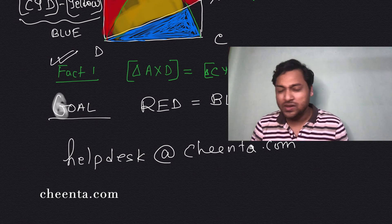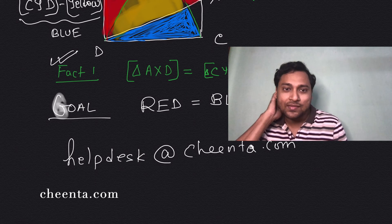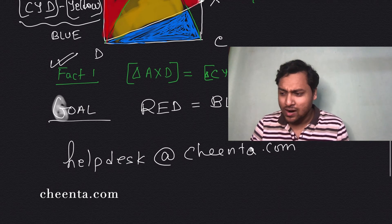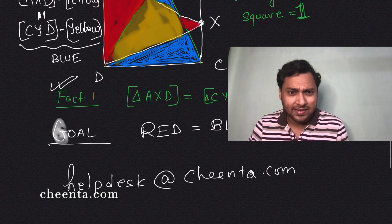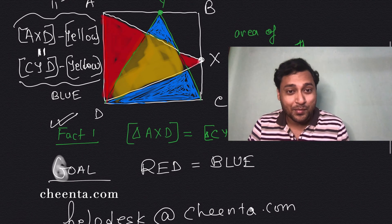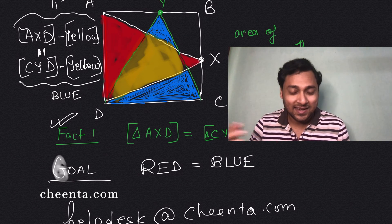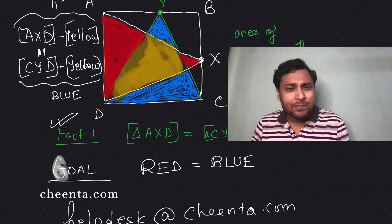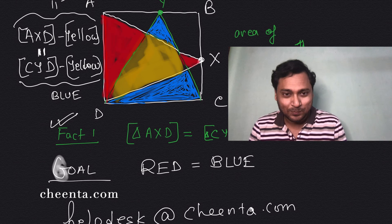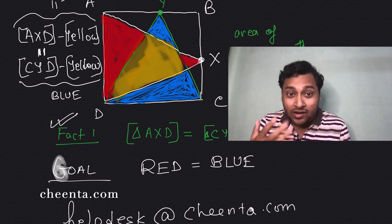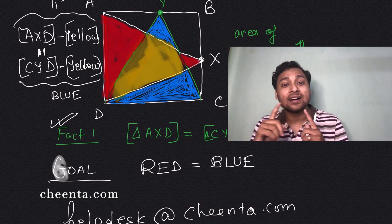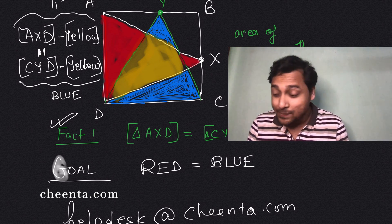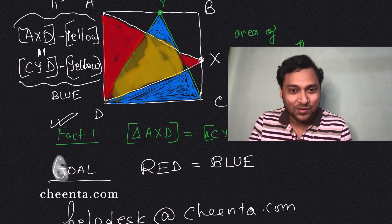So we do this in level two and three of Cheenta maths olympiad program. And if you are in our program you have already seen it before. If you are not in our program then you can see it here or in Titu Andreescu's book or in those Russian books. So keep on doing great mathematics, send me a picture of your created overlapping figures, and I will post it, showcase it on our website. And I'll see you in the next one. Alright, bye.